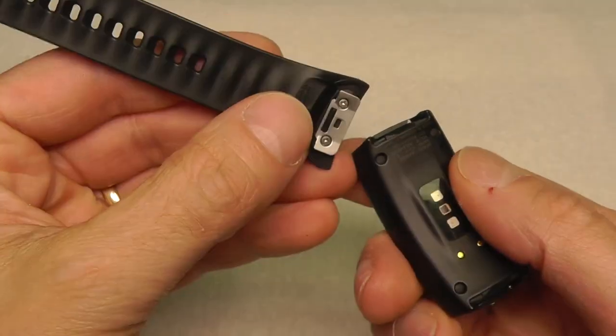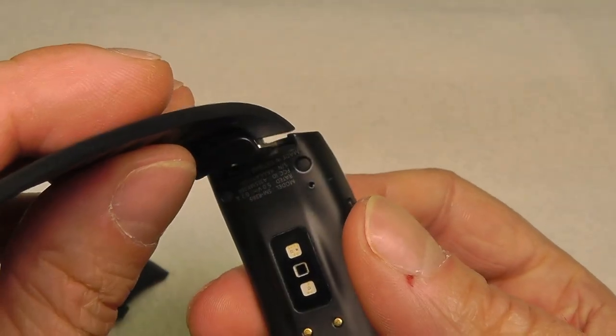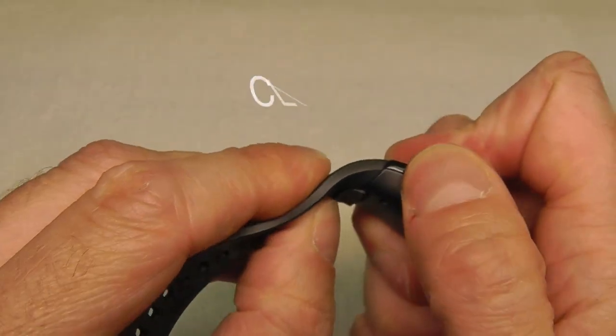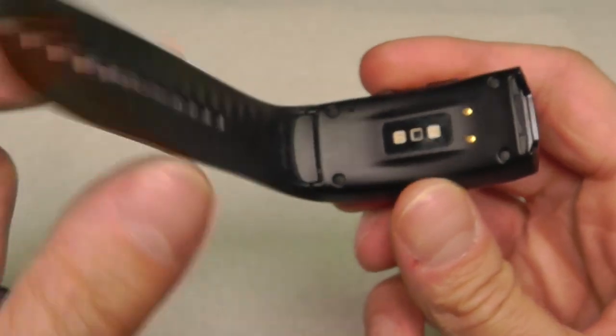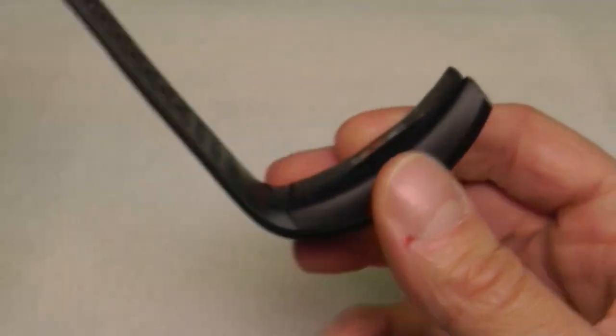We have these metal brackets. When we want to install our new armband, we just slide those metal brackets into the body. You just heard this click sound, and you know you've done it right when you hear this click sound.